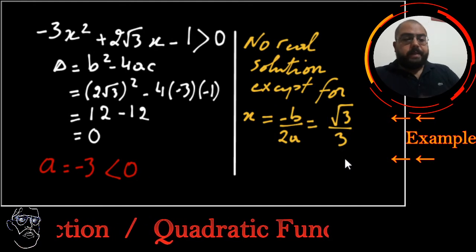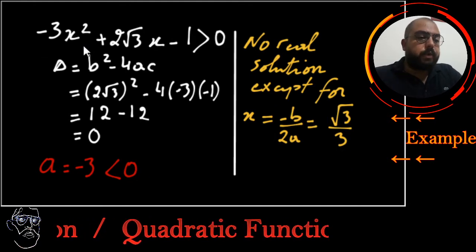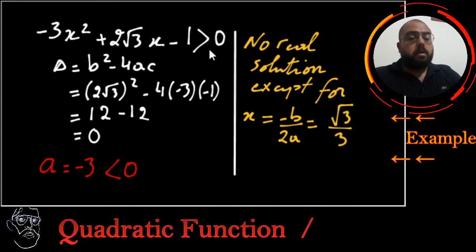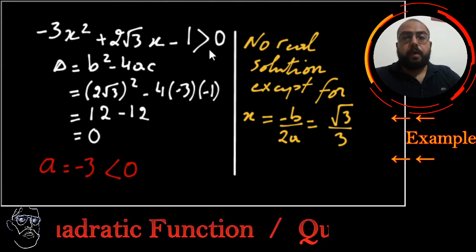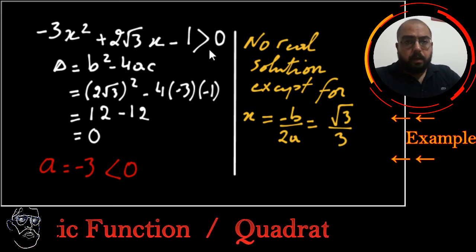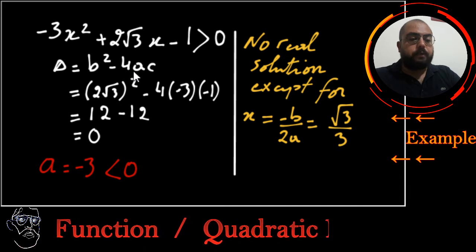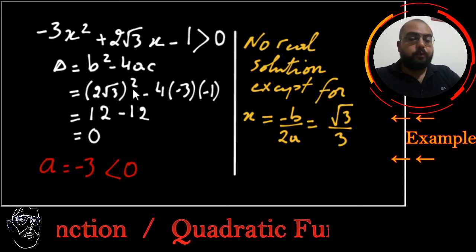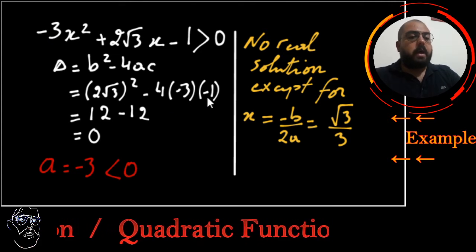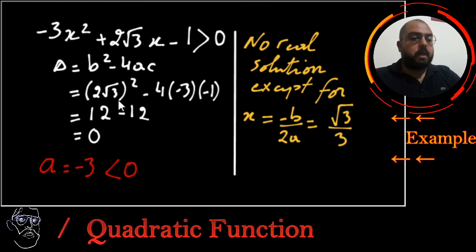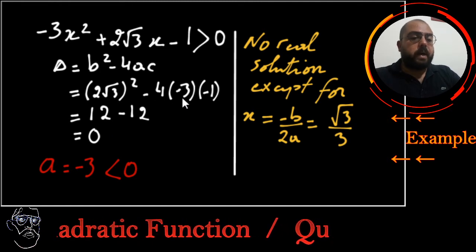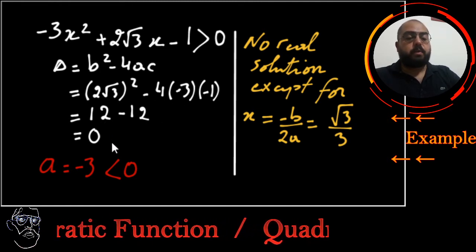Let's take another example: -3x² + 2√3·x - 1 > 0. I'm looking for the values of x which will give me greater than 0. Again I will go through delta. Delta is b² - 4ac: (2√3)² - 4 × (-3) × (-1). (2√3)² is 12, minus 4 × (-3) × (-1) is -12. So 12 - 12 = 0. Delta is 0.